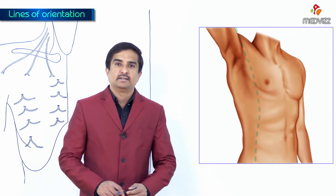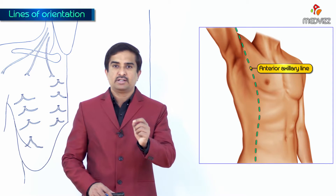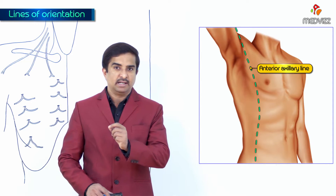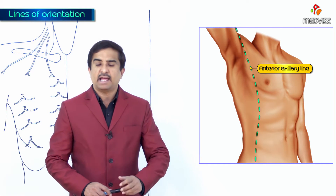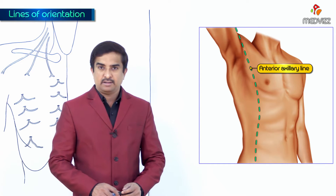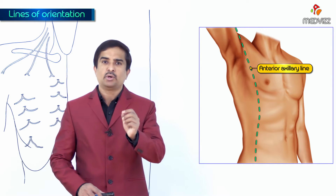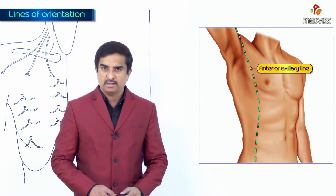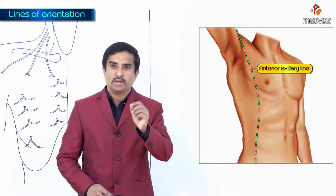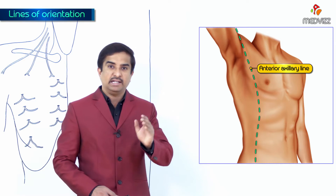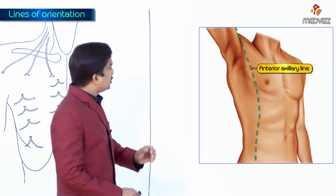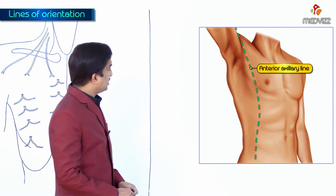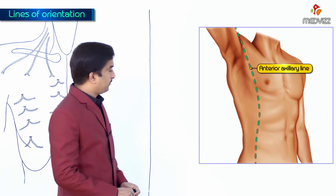Next is the anterior axillary line. The anterior axillary line is also a vertical line which runs vertically downwards from the anterior axillary fold.